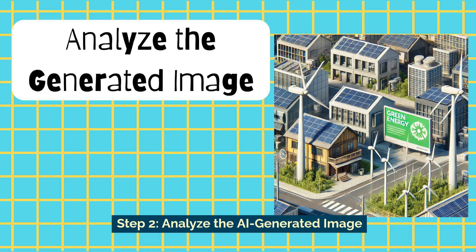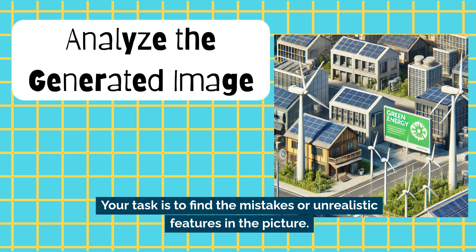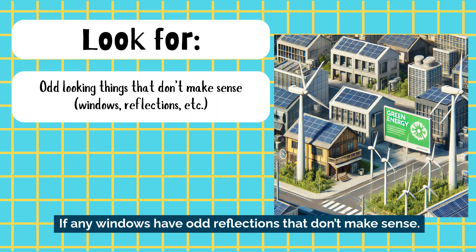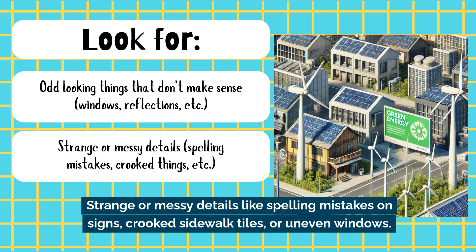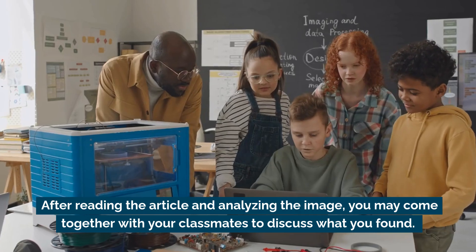Step two: analyze the AI generated image. You'll take a look at an image that was created by an AI program. Your task is to find the mistakes or unrealistic features in the picture. Some things to look for: odd reflections in windows that don't make sense, strange or messy details like spelling mistakes on signs, crooked sidewalk tiles, or uneven windows, and anything about the environment that seems unnatural or repetitive.